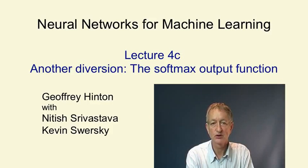In this video, we're going to look at the softmax output function. This is a way of forcing the outputs of a neural network to sum to one, so that they can represent a probability distribution across discrete mutually exclusive alternatives.